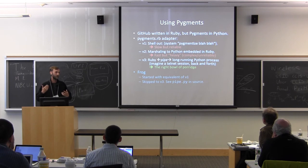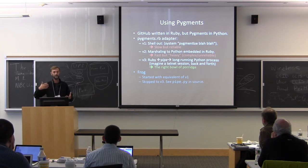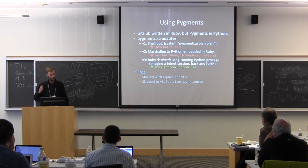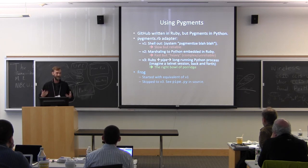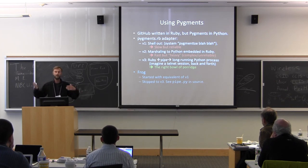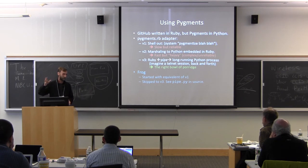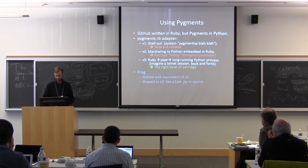If anyone here enjoys parsers and would love to help write a parser for Markdown, I have a great picket fence you might enjoy helping whitewash. Using Pygments was a little more interesting to integrate. GitHub.com uses Pygments to colorize and highlight source code. Pygments is written in Python, so GitHub's first approach was to shell out and call the Pygmentize command — reliable but slow. Next they embedded Python in Ruby — fast but heavy and complicated. Finally they settled on spinning up a Python process and doing a very simple text session back and forth. I started with the first approach and skipped directly to the third, and it's the simplest Python program in the world — you can see it in the repo.